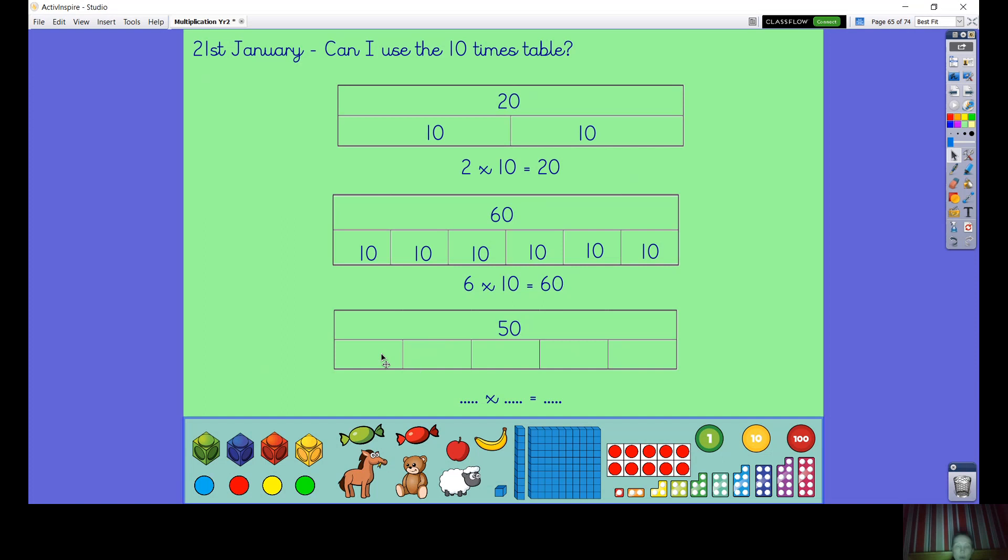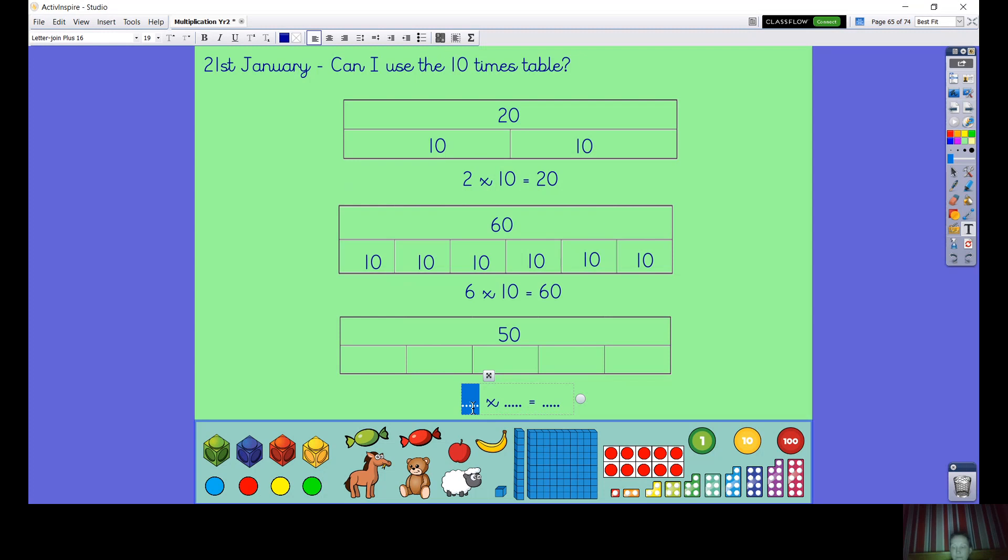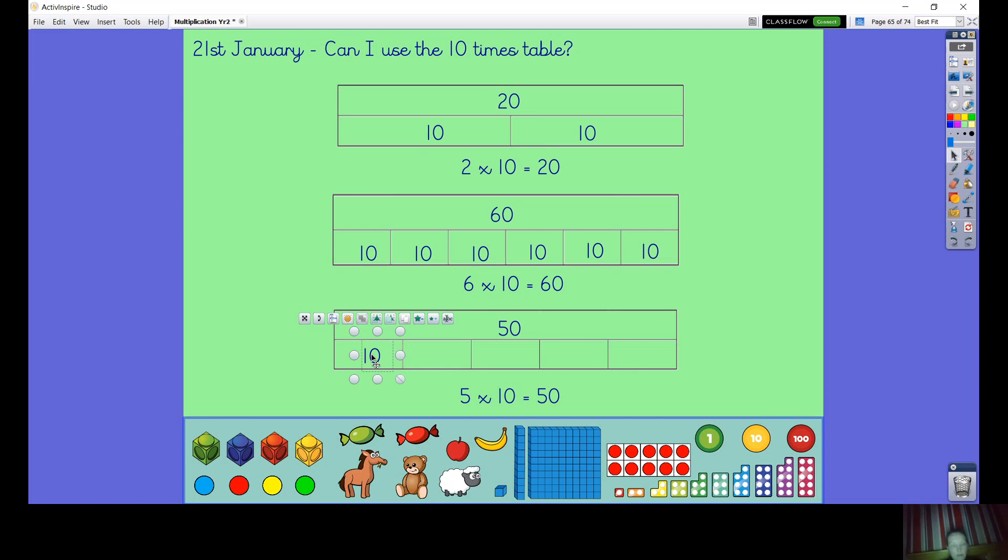Down here we've got this bit at the top but no numbers down the bottom. When we count in something we need to get to 50. I wonder what we're counting to get to 50. Well, given our clue is our 10 times table, should we try counting in 10s? 10, 20, 30, 40, 50. So we have got 5 groups of 10 which gives us 50. So into each of these boxes we would need to put 10.